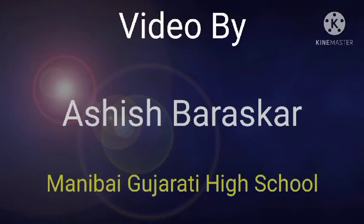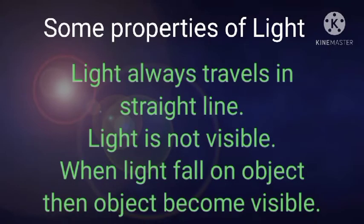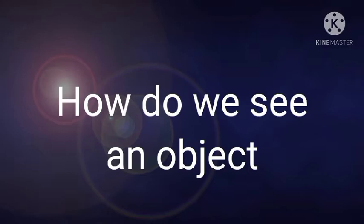We know that light always travels in a straight line and light is not visible by itself. When light falls on an object, only then that object becomes visible. Light travels at the speed of three lakh kilometers per second. The question arises: why do we see an object when light falls on it?